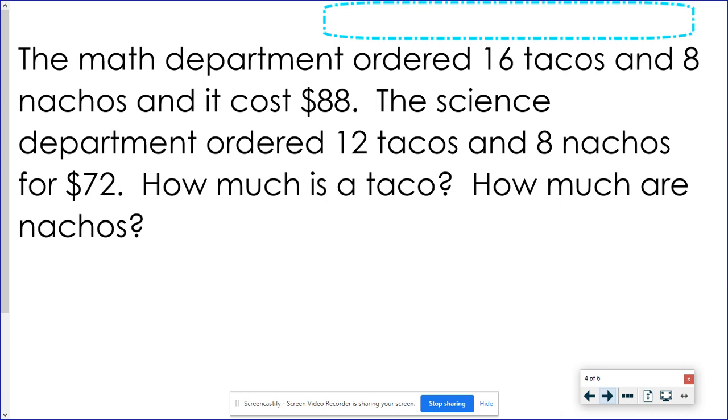The math department ordered lunch. We ordered 16 tacos and 8 nachos and it cost $88. Science department ordered 12 tacos and 8 nachos and it cost $72. How much does each one cost? So I'm going to use T because I can draw my T's carefully and I'm going to use an N. So those are my variables. So 16 tacos and 8 nachos was $88. Science department had 12 tacos but they still ordered 8 nachos and that was $72.